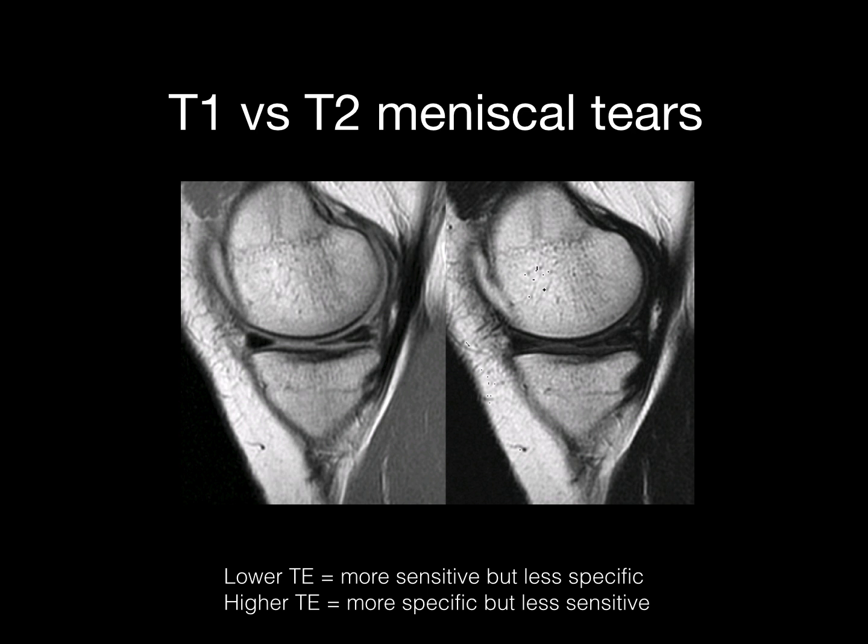Regarding T1 versus T2 signal intensity: lower TE sequences are more sensitive but less specific, while higher TE sequences are more specific but less sensitive. If you see the tear on T1 but not on T2, it still equals a tear. If you see it on the T2, it is a true tear.